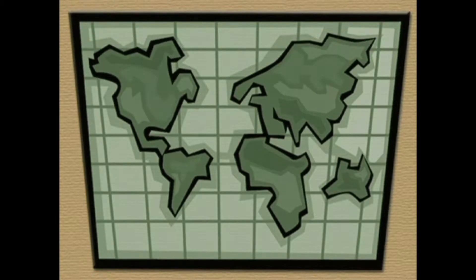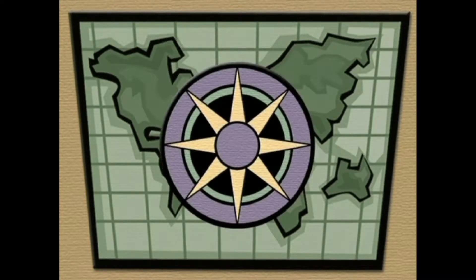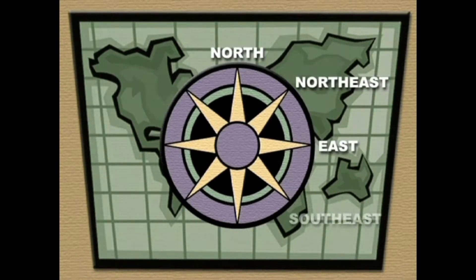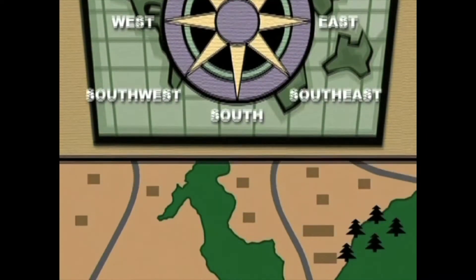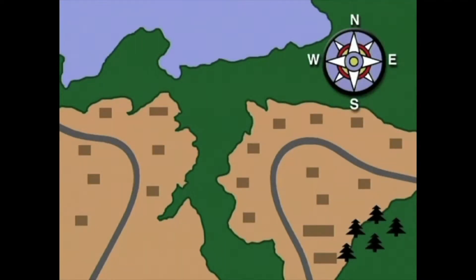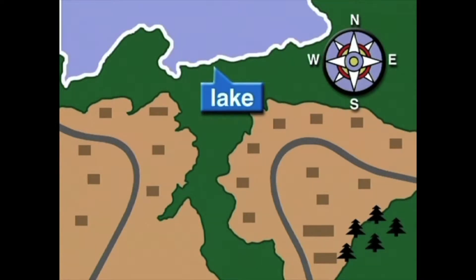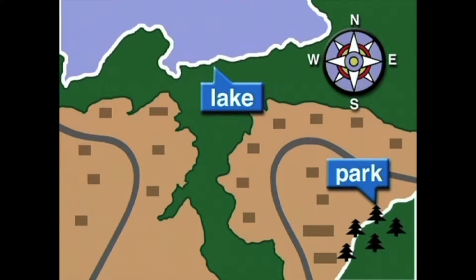There are eight main directions of a compass: north, northeast, east, southeast, south, southwest, west, and northwest. We can use these directions to help us locate places on our map. For example, we can say that the lake is located in the northern part of the map, while the park is located in the southeast corner.